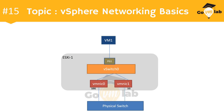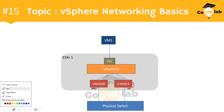One important thing to notice in this diagram is the bandwidth supported by each of these physical uplinks. VMNIC0 supports 10 Gbps network bandwidth, whereas VMNIC1 is only capable of providing 1 Gbps network bandwidth. So that's the key difference in this diagram — both adapters have different bandwidth capacities: VMNIC0 at 10 Gbps and VMNIC1 at 1 Gbps.